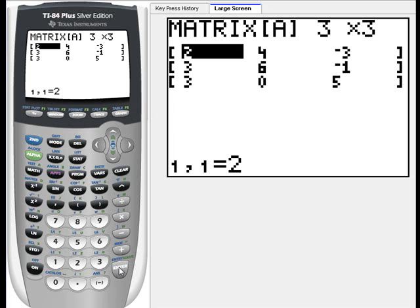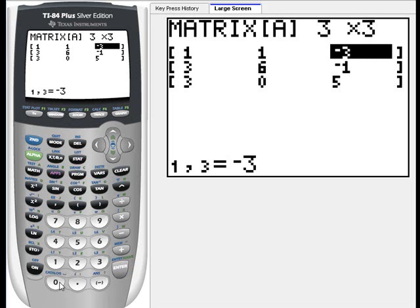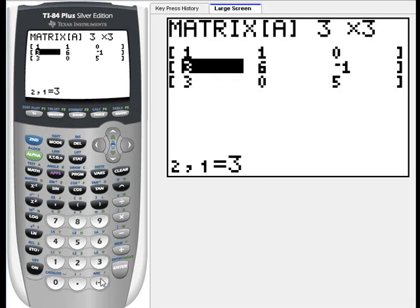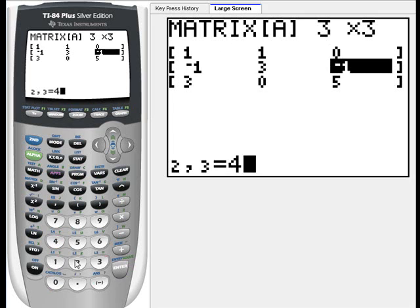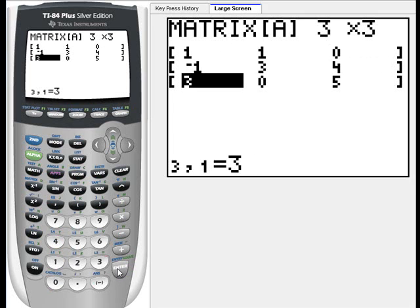Let's see. Our matrix, the first row is 1, 1, 0. And the second row is negative 1, 3, and 4. And the third row is 0, 4, and 3.